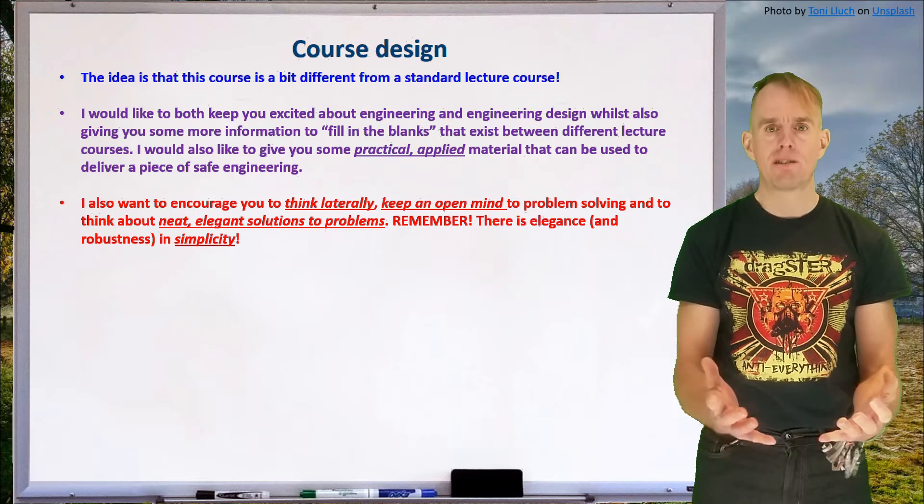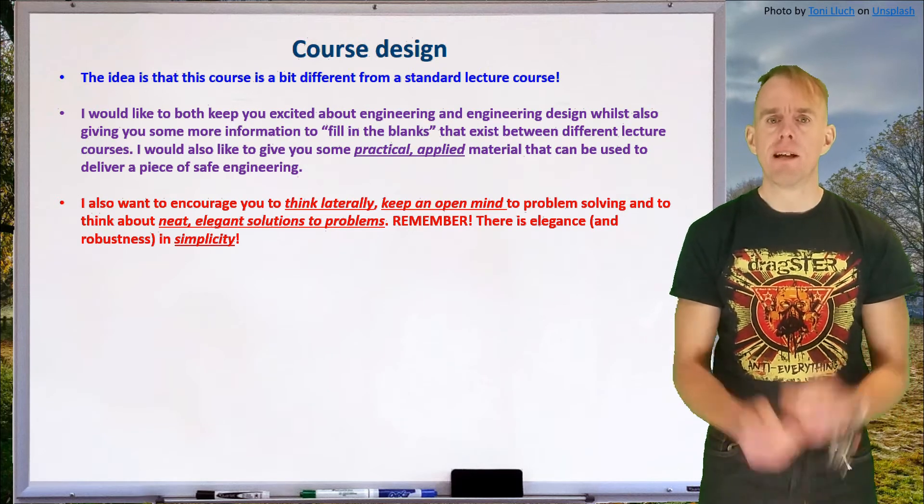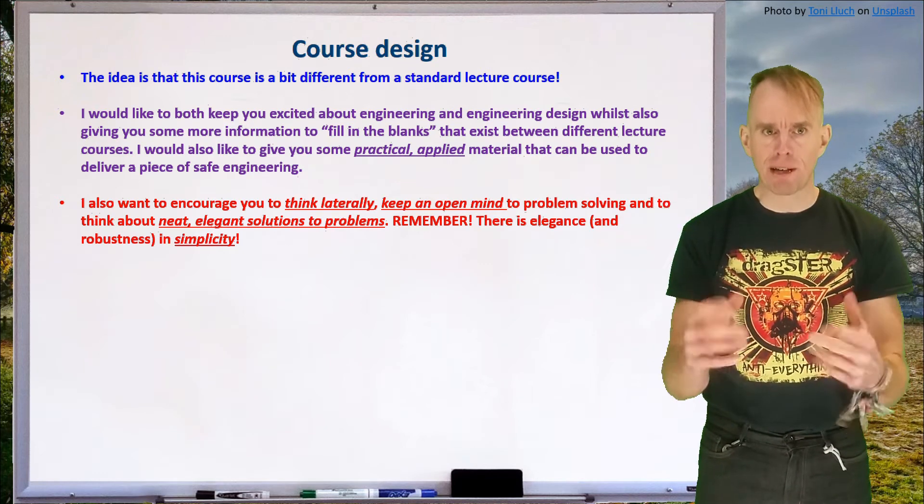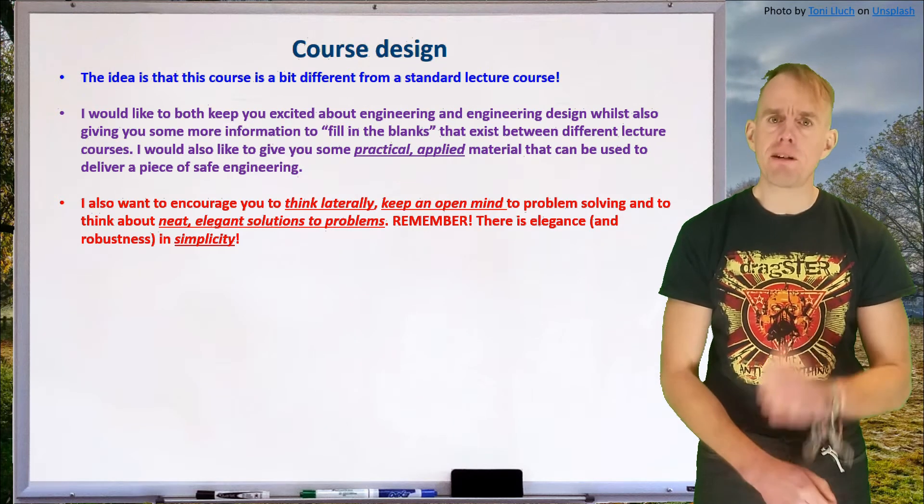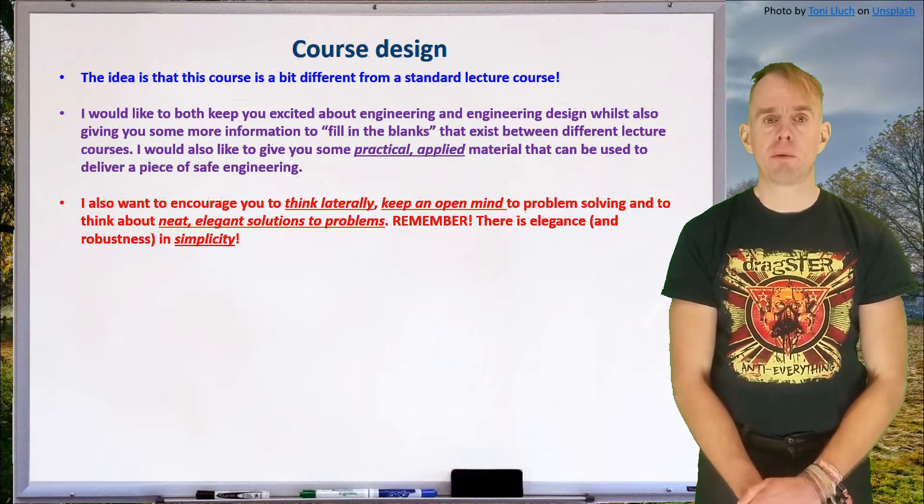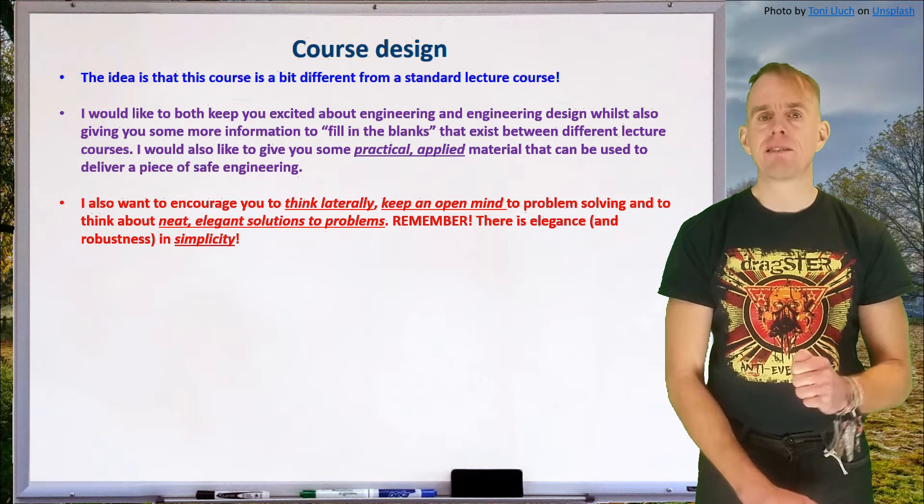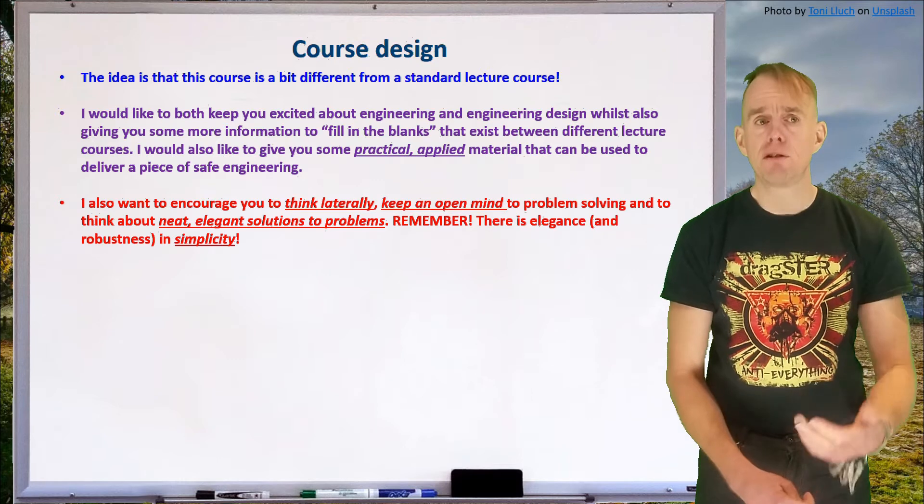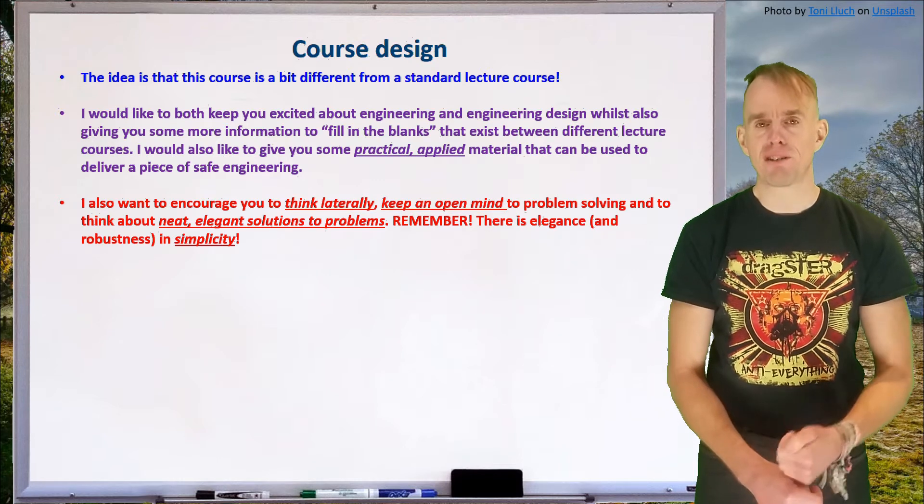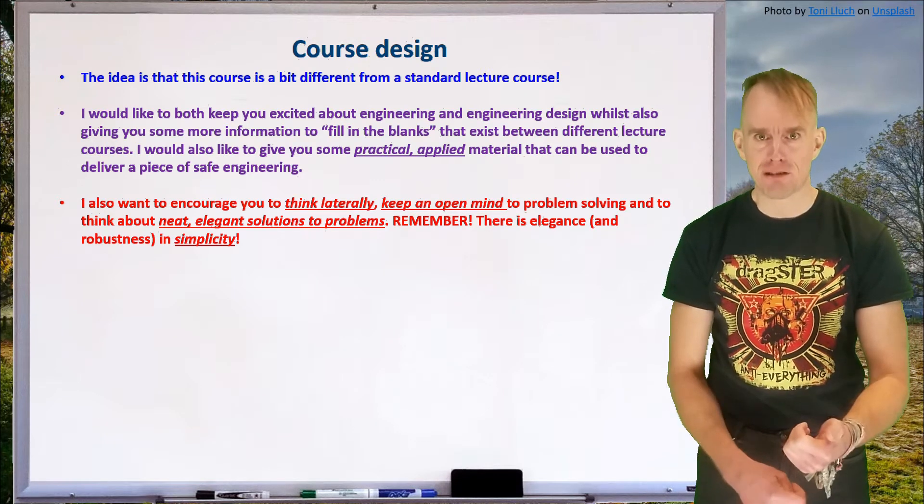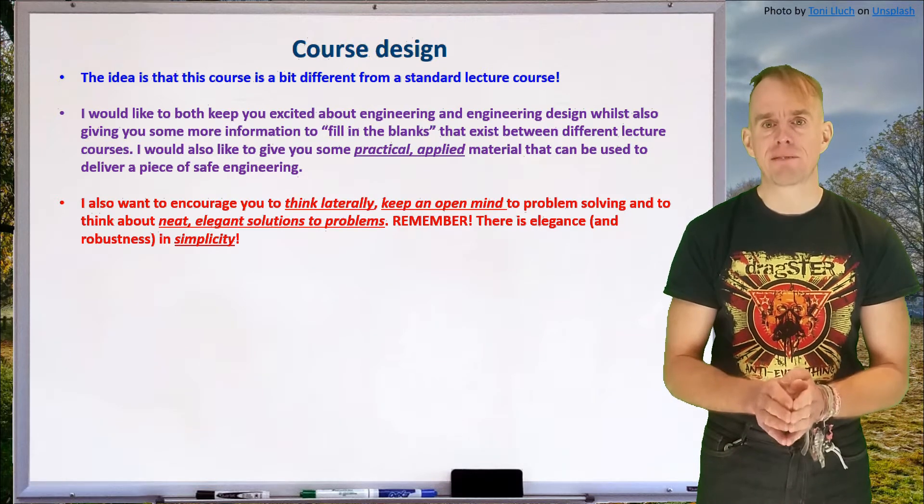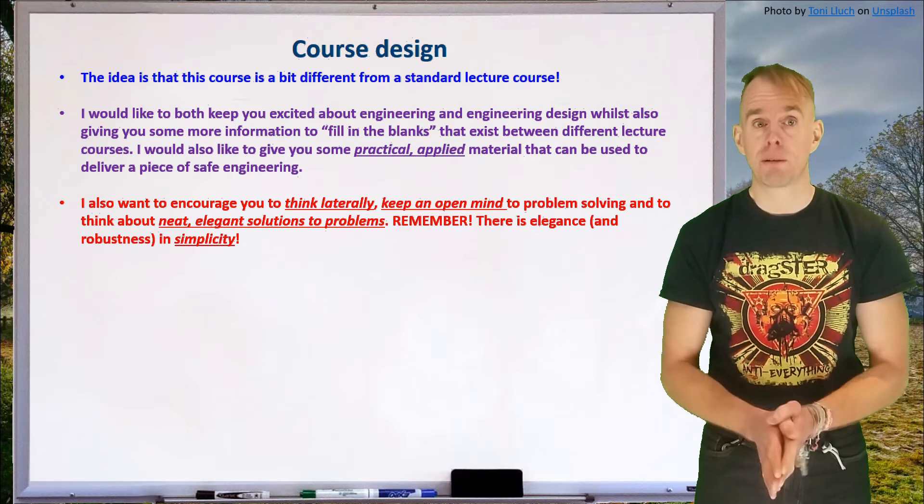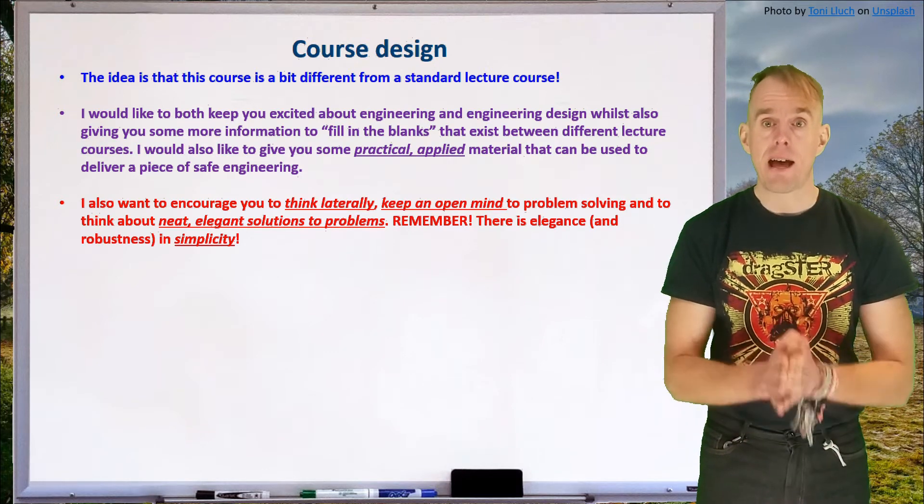All too many times I see people, especially early on in their engineering career, going to solve a problem and come up with this incredibly complex thing that solves that problem. Then the experienced engineer will turn around and go, well done, nice piece of work. But have you thought of? And the subject of have you thought of is usually something beautifully elegant, beautifully simple, hence robust, hence safe, hence operable, hence manufacturable, hence usable. So please don't forget that you don't have to overcomplicate things. In fact, I'd encourage you never to overcomplicate things. Aim for simplicity, aim for elegance.